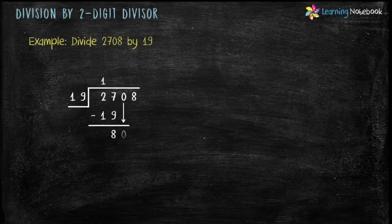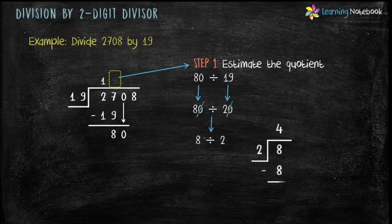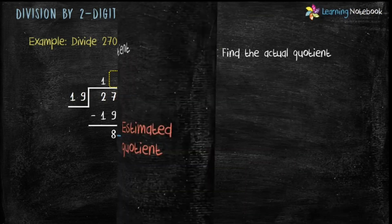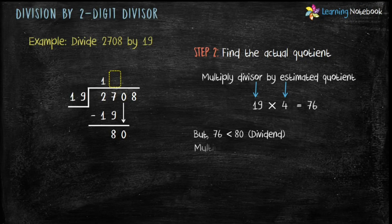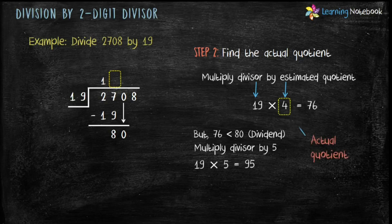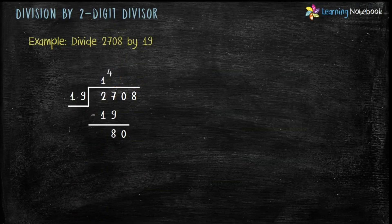Now copy the next digit 0. We now have to estimate the quotient for 80 divided by 19. 80 is already rounded off, and 19 is rounded off to 20. Cancel 0 by 0 and we get 8 divided by 2. On dividing we get 4 as the estimated quotient. Now let's find the actual quotient. 19 into 4 equals 76. But 76 is less than 80. So we try multiplying the divisor by 5. 19 into 5 equals 95. But 95 is greater than 80. Therefore 4 is the actual quotient. 19 into 4 equals 76, and 80 minus 76 equals 4.